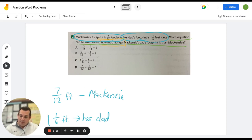So, it starts here by saying how much longer is dad's footprint. Well, let me get that set up. The dad's footprint is one and one-sixth. And I'm going to subtract the seven-twelfths. So, now I'm looking at my four answer choices.